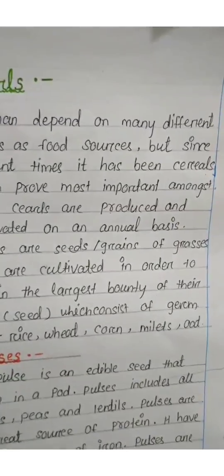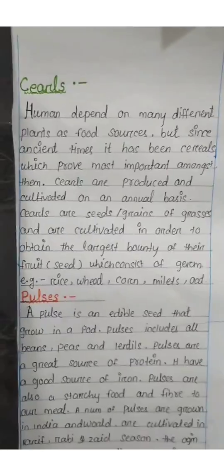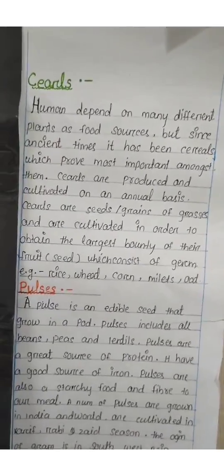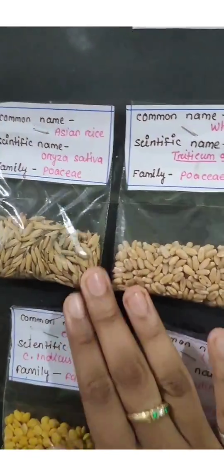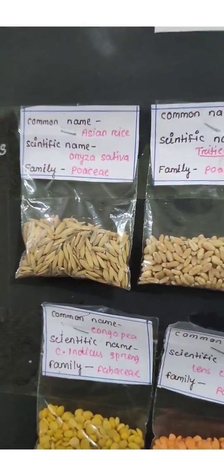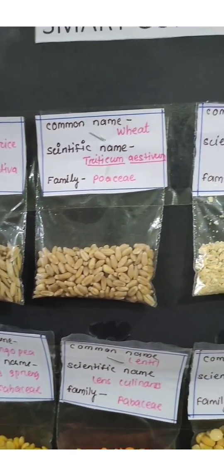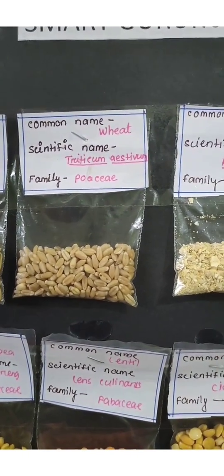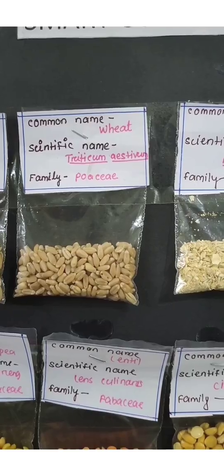In cereals, I have collected rice, wheat, oats, millet, and maize. Cereals originate from India and are the staple food in the whole world. They are cultivated on an annual basis. Some important cereals are like Asian rice, the scientific name is Oryza sativa.